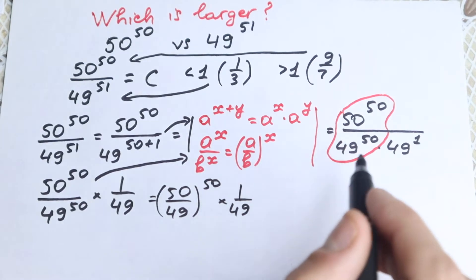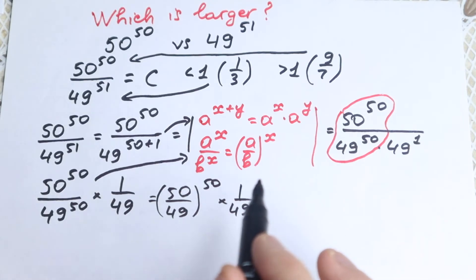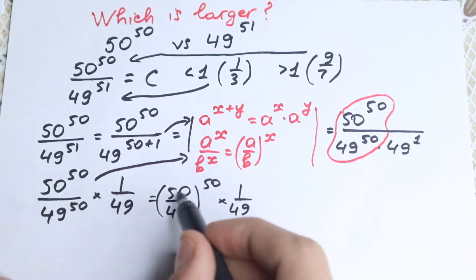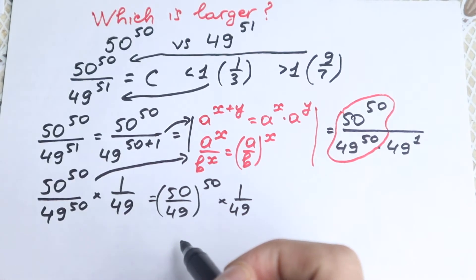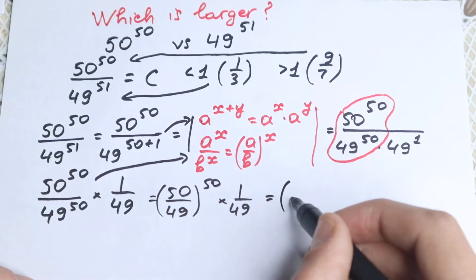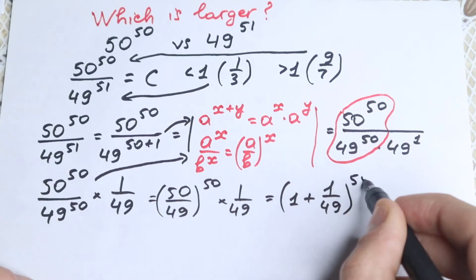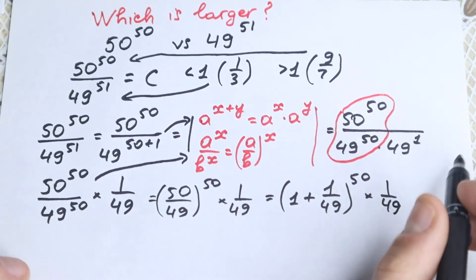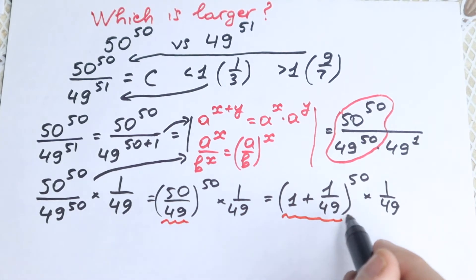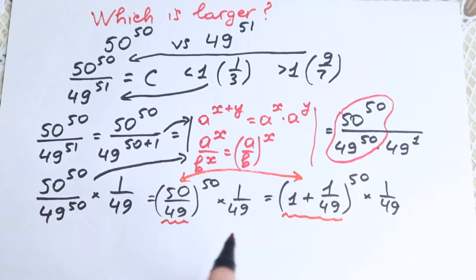Now, 50 over 49 we can write in a different way — as a sum. If we divide 50 over 49, we get 1 plus 1 over 49. So the expression becomes: 1 plus 1 over 49, all raised to the power 50, times 1 over 49. Nothing has changed; we just rewrote the fraction.